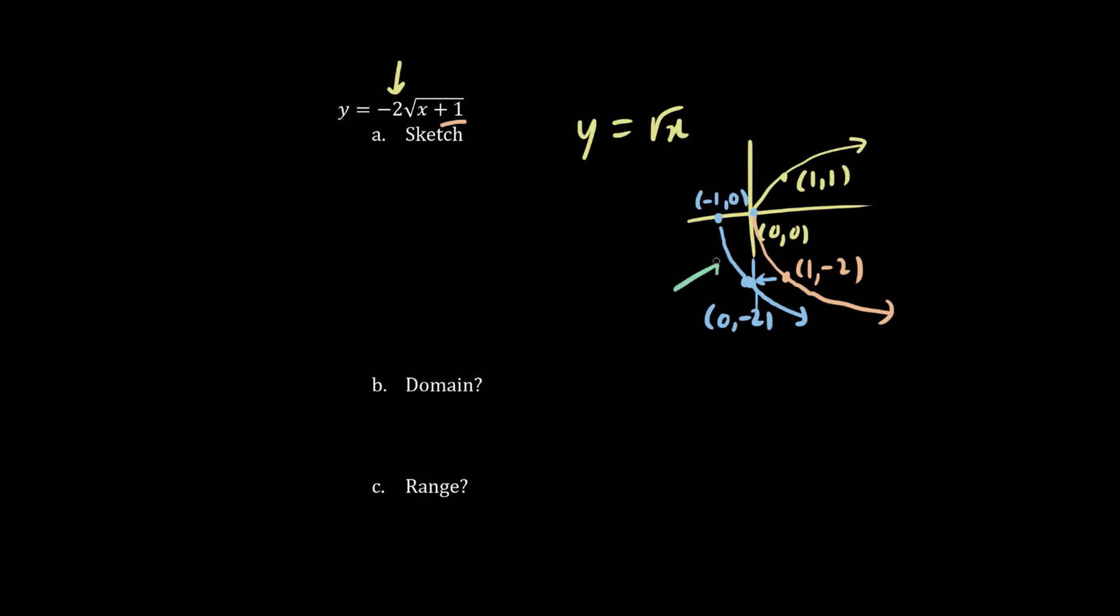So the domain of this graph is (x + 1), the inside of the radical symbol, is greater than or equal to 0. Subtracting 1 from both sides, we have x is greater than or equal to -1. And that looks correct based off this diagram here. As for the range, we start here and we always go down more and more. So y is less than or equal to 0.